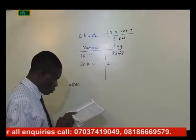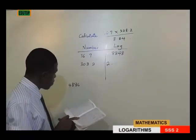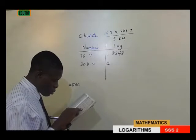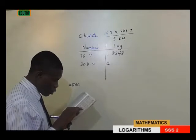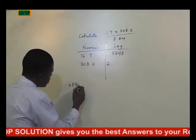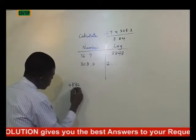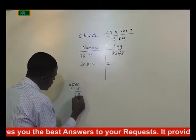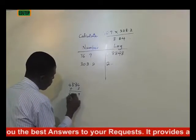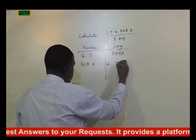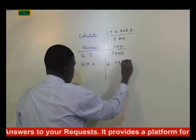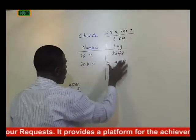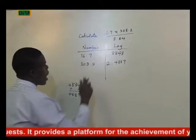Starting with 6, difference of 2. Then 30 under 8, difference of 2. Difference of 2 is 3. So a difference is meant to be added, so we add the difference, which gives us 9, 8, 4. So we come here and write 4, 8, 8, 9. So these are the two values for the numerator.